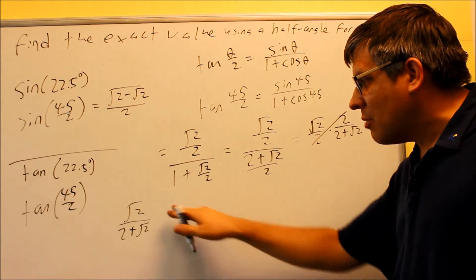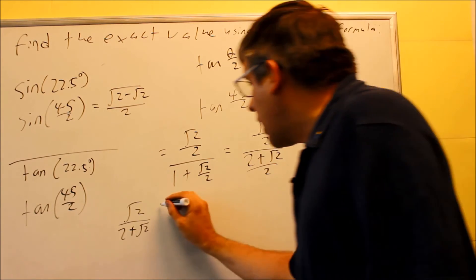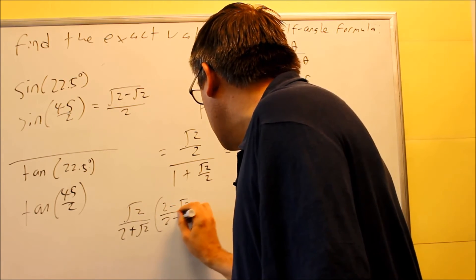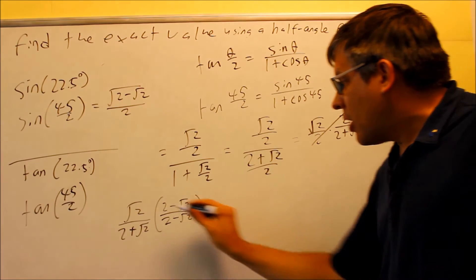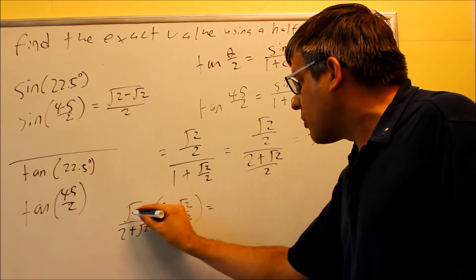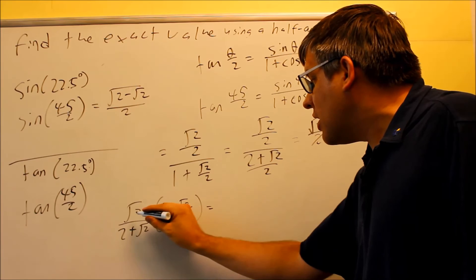And I'm going to multiply top and bottom by 2 minus radical 2. And I'll do that across the top, across the bottom. Now across the top, we're going to multiply radical 2 times both of these.